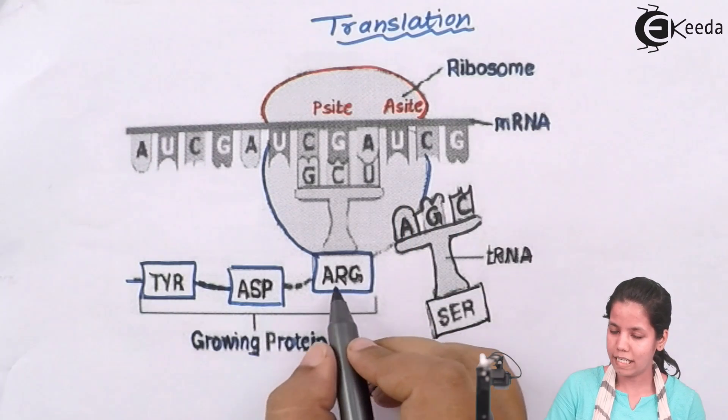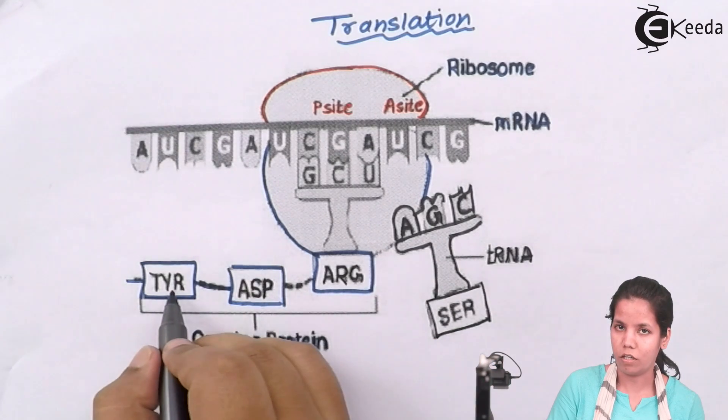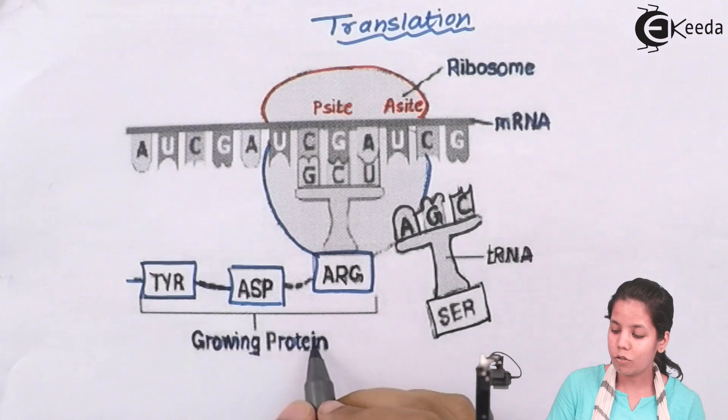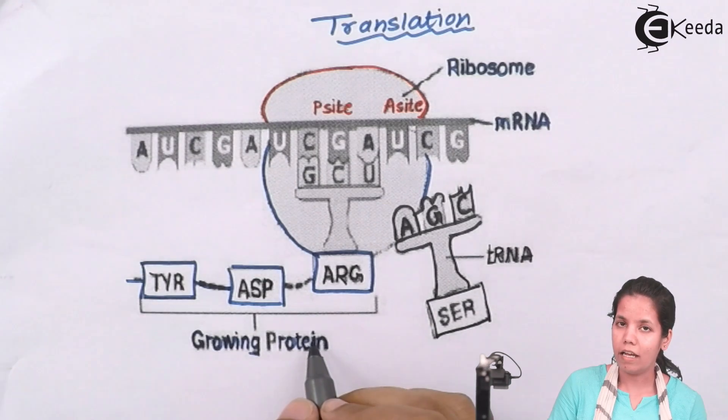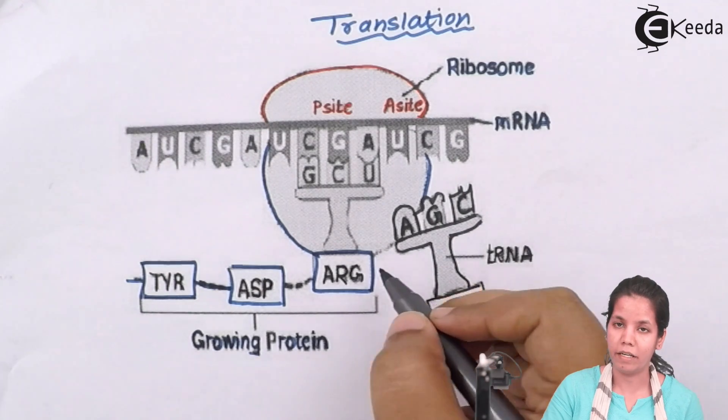Once this is done, what happens is all the amino acids form a polypeptide chain or a long chain and this growing polypeptide chain is continuously formed once all the proteins are formed. Once all the proteins are formed, then this chain would be terminated.